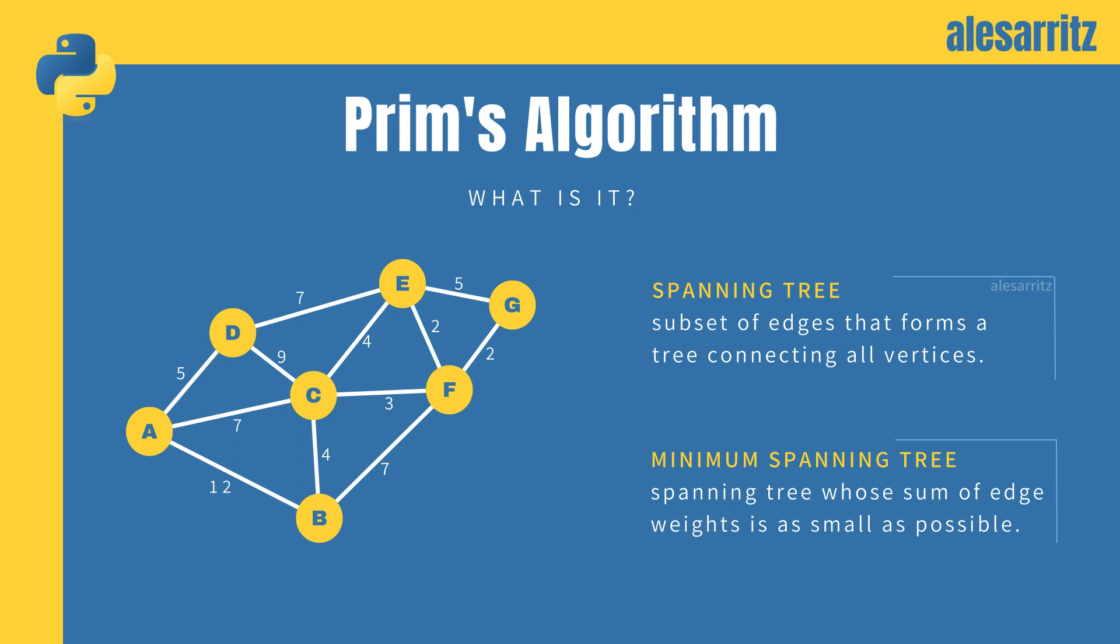Prim's algorithm uses the greedy approach, therefore it makes the decision of what to do next by selecting the best local option without regard to the global structure. To be precise, Prim's algorithm repeatedly selects the smallest weight edge that will enlarge the number of vertices in tree.